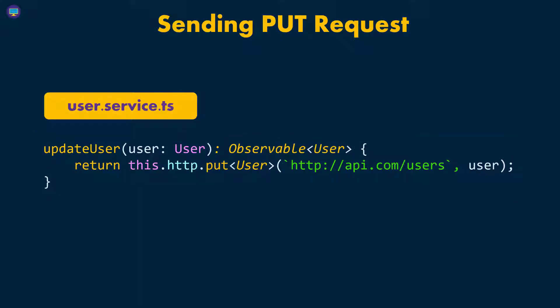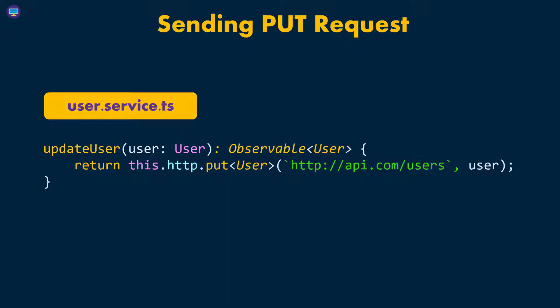But this time, we're going to call put on the HTTP client and pass in the URL. We also have to pass in the payload. As you can see, we're passing in this payload inside the function as the request body to that HTTP call.